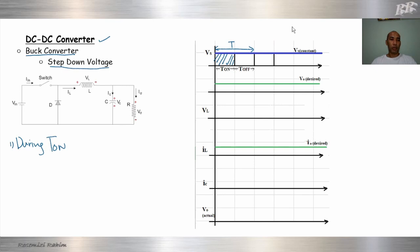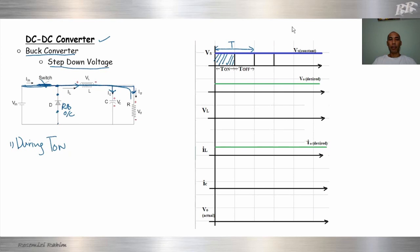So what happens? When we switch on, the switch becomes short. Current will pass through the switch, go through the inductor, then pass through the LC. Current will split into two: inductor current here, and capacitor current plus output current. At this time, the diode will be reverse biased, because the voltage on the source side is higher. So the diode is reverse biased and open circuit. All the current will go to the load and go back to the input — completing one cycle.